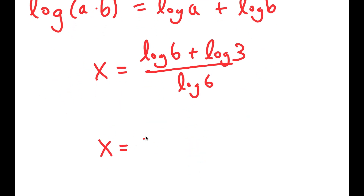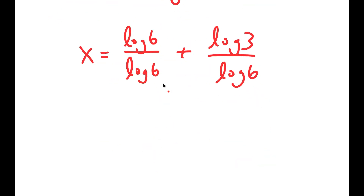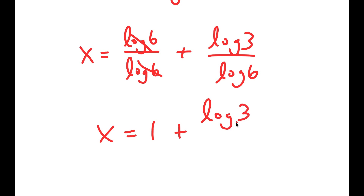So now this turns into log 6 over log 6 plus log 3 over log 6. These two cancel out, so I get x is equal to 1 plus log 3 over log 6.